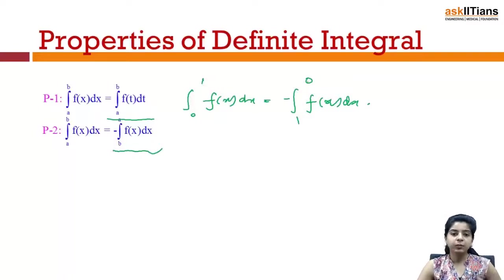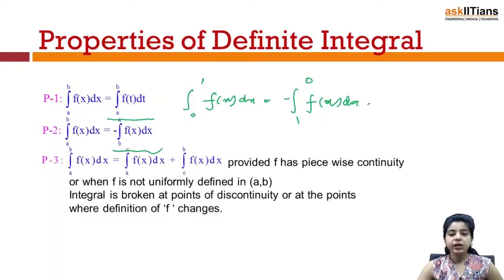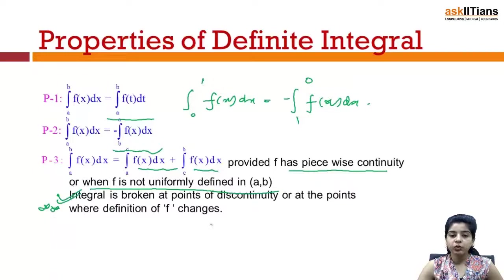These properties prove useful in questions where if you can interchange your limits it becomes easy to solve. The third property says integral a to b fx dx equals integral a to c fx dx plus integral c to b fx dx, provided f has piecewise continuity or when f is not uniformly defined in [a, b]. The integral is broken at points of either discontinuity or at points where the definition of f changes.